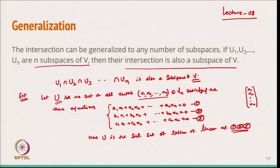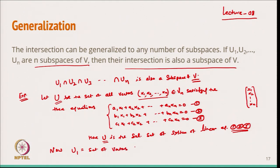This is a system with n variables and 3 equations, so there will be infinitely many solutions. Since it is a homogeneous system, it always has a solution. That solution set we take as u.